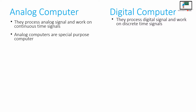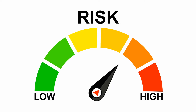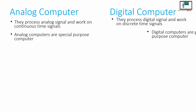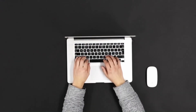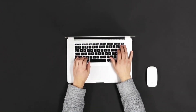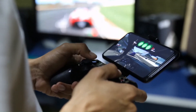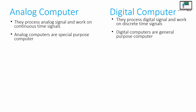Analog computers are special purpose computers. For example, the speedometer is an analog device that is used to measure the speed only. Whereas the digital computers are general purpose computers — they are used for multiple tasks. For example, the laptop or the desktop computers are digital computers that can be used for preparing documents, playing games, and doing other activities.